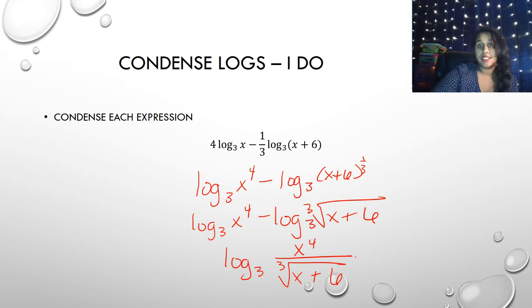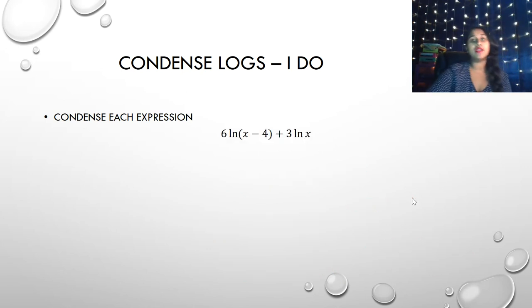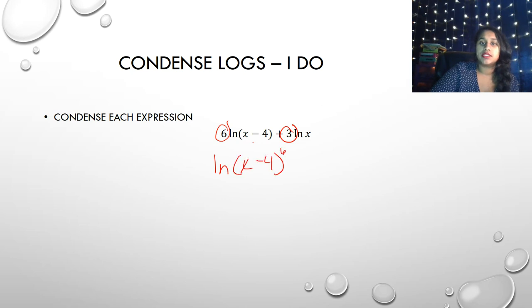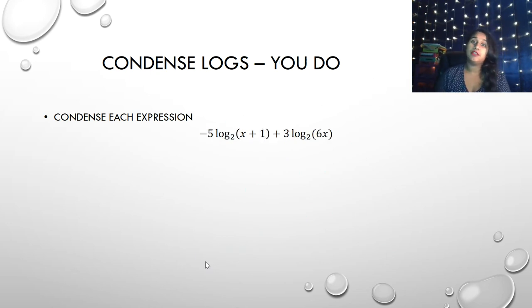Here I have another condensation of the expression. The first thing I'm going to deal with is this power and this power right here. So that becomes ln of x minus 4 to the 6th plus ln of x cubed. Now this plus tells me it's a product. So that becomes ln of x cubed times x minus 4 to the 6th. That's that whole bit, and that's our end answer. So now I have some problems for you. I would highly recommend that you dealt with this power and this power first before dealing with that product rule.